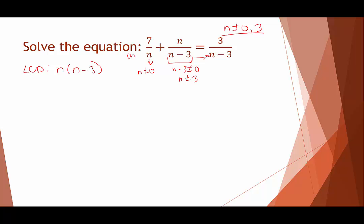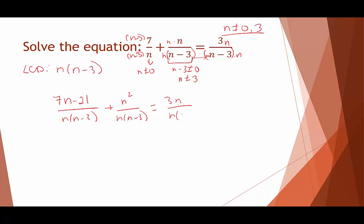The first fraction over n is missing a factor of (n minus 3), the second fraction over (n minus 3) is missing a factor of n, and the third is also missing a factor of n. Rewriting and multiplying through gives numerators: 7n minus 21 over n(n minus 3), plus n squared over n(n minus 3), equals 3n over n(n minus 3). Canceling the denominators leaves 7n minus 21 plus n squared equals 3n.